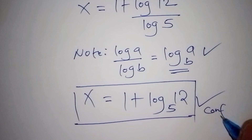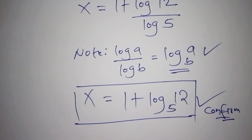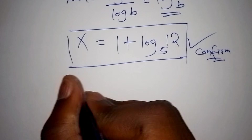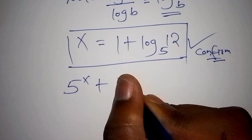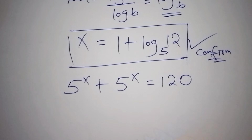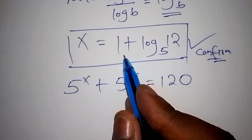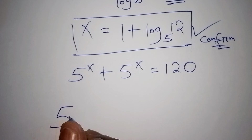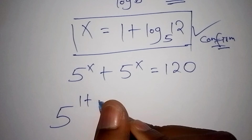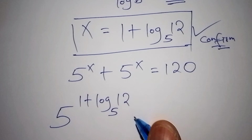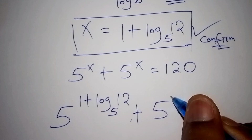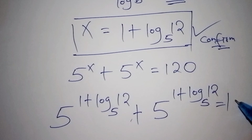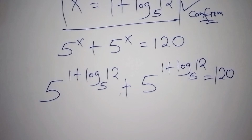Let us confirm or check if this is indeed the correct value for x. We go back to the original equation: 5 to the power of x plus 5 to the power of x equals 120. Wherever we see 'to the power of x', we substitute 1 plus log of 12 to the base of 5. So we have 5 to the power of (1 plus log₅12), plus 5 to the power of (1 plus log₅12), equals 120.